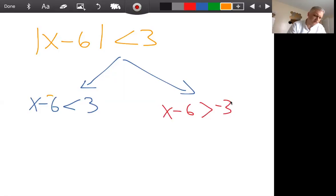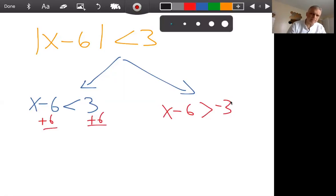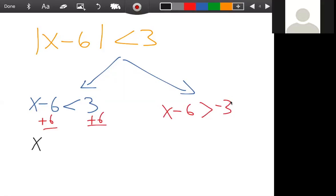Well, we have to cancel the minus 6, which means we're gonna go plus 6 plus 6. Okay, so that leaves us with what? X is less than 9.